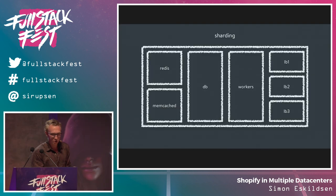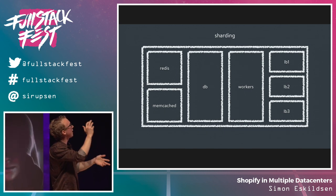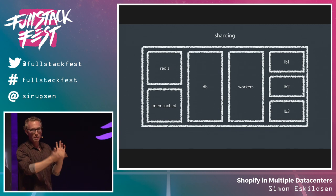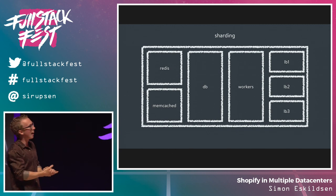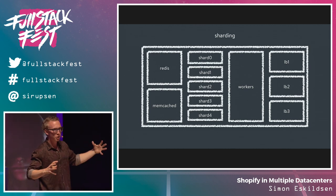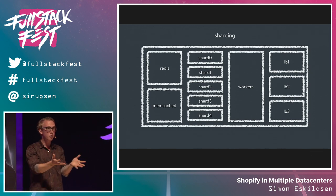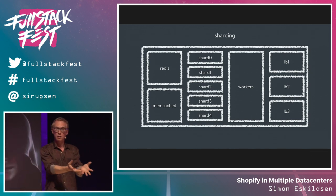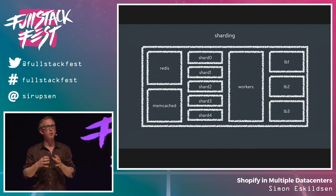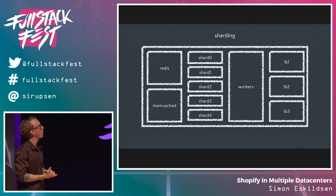Before sharding, our infrastructure looked like this: some load balancers, some workers, a database, Redis, memcache, all working together. In 2013 we split the database into multiple shards so that write traffic could scale out. The reason we have so much write traffic is that when you're trying to sell a lot of things, we need to create checkouts, create orders, take payments — there's a lot of writes that have to happen and they have to be quite consistent, which is one of our big challenges.